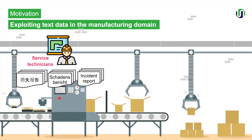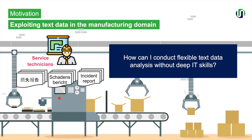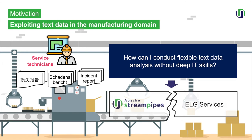So the arising question is: how to conduct flexible text data analysis, particularly in cases where necessary language or deep IT skills are not present in the respective company? The answer: by using available open-source technology focused on non-technical users, such as Apache StreamPipes, in combination with language technology algorithms provided by accessible services on the European Language Grid platform.